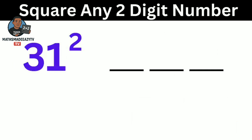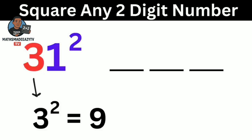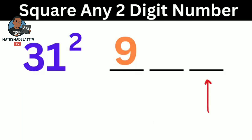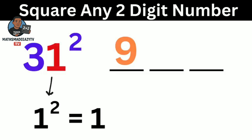Now we square the first digit, which is 3, so we have 3 raised to power 2 to give us 9. We write the 9 here. We leave the middle part for now and focus on the third part. We take the last digit, which is 1, we square it, and we have 1, we put it there.